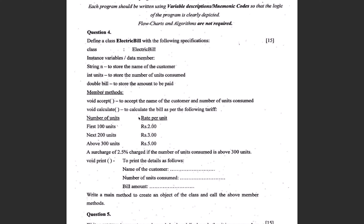After you give it a reading, the only thing that may confuse some people — and it confuses me as well — is the rate to be calculated for the given units. For the first hundred units the rate is fixed at 2, for the next 200 at 3. So if the units are say 293, the first hundred will be calculated at 2 and the next 193 (that is 293 minus the first hundred) will be calculated at 3, and above 300 it will be 5. A surcharge of 2.5% applies if the number of units consumed is above 300.